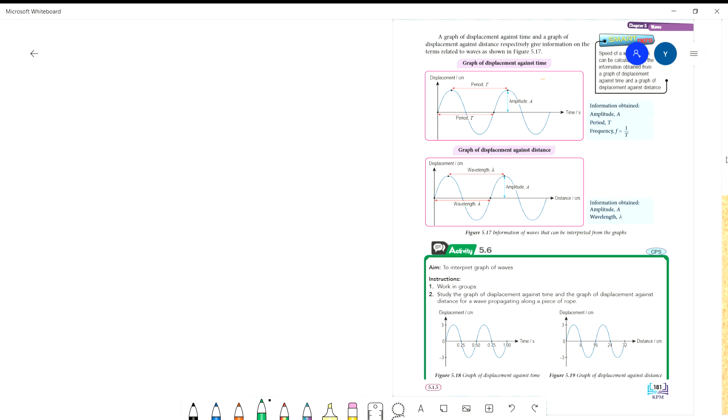Assalamualaikum. Today we're going to continue part 2 of waves: the introduction. We already discussed the meaning of waves, the properties, and characteristics. Now we're going for the graph analysis. Before we discuss the graph, make sure you still remember the motion of an oscillation. Let's make a simple comparison with a pendulum bob.